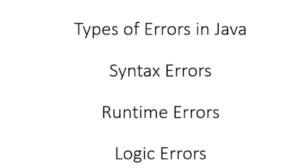Wrong expression formation and incorrect placing of parentheses can cause logical errors in a program. Another example is a wrong sequence of instructions or statements — sometimes we write different statements in place of another statement that should be in that particular portion. At that time, these logical errors will display the wrong output on the computer screen.